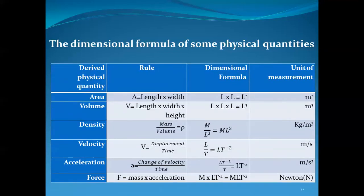We have a table for the dimensional formulas of some physical quantities. The table has four columns: column one — derived physical quantity; column two — the rule; column three — the dimensional formula; column four — the unit of measurement.